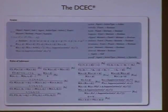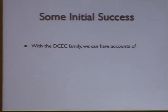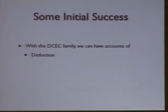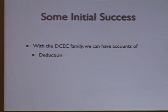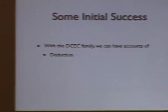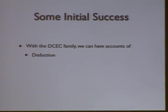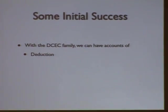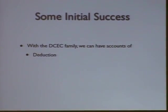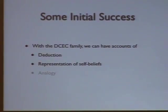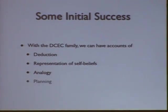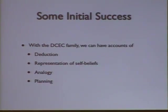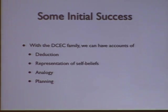We call it the DCEC*, the Deontic Cognitive Event Calculus with a star. This is a somewhat incomplete list of what we have so far. We have some inference rules, and we have something that maps the agent to the self — that's where the star comes from; it allows for self-reference. We've been able to demonstrate simple deduction, representation of beliefs about the self, analogical reasoning, and some simple planning.